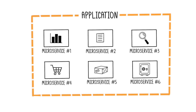To understand the service mesh, we must first grasp the concept of microservices. Microservices Architecture is a software architecture approach where an application is decomposed into several small services. Each service specializes in a single functionality. For instance, in an online shopping application, there would be different microservices for the user interface, the shopping cart, the home page, the order history, the inventory, the payment, etc.